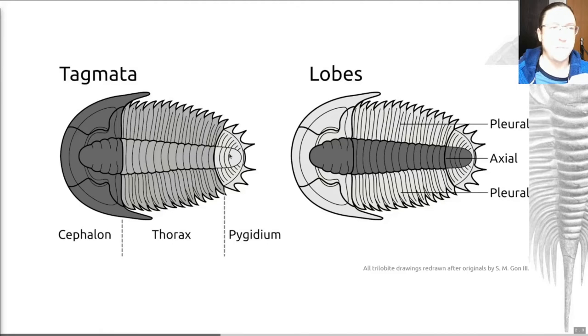This is a dorsal view, we're looking down on the top of the animal. Their exoskeleton is also longitudinally divided into three different lobes, hence the name trilobite: the axial one in the middle and then the pleural ones either side.